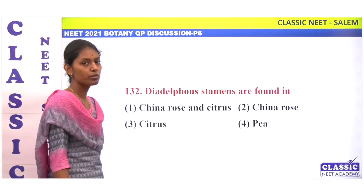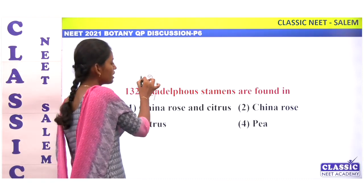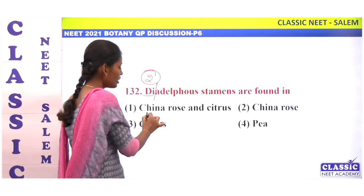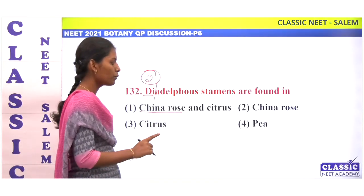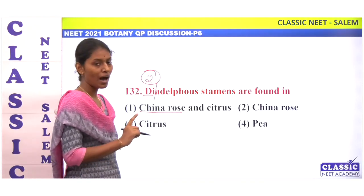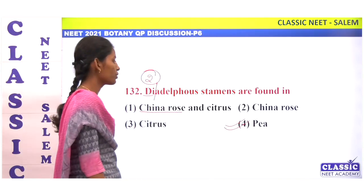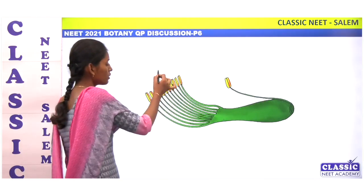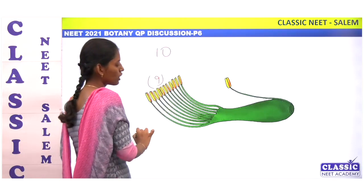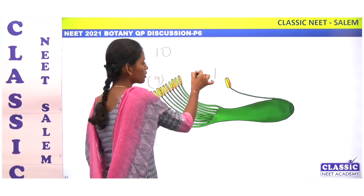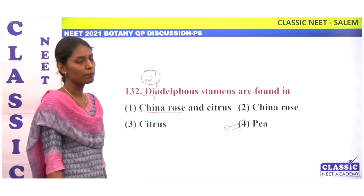Diadelphous stamens are found in what? Diadelphous means two-bundle arrangement of stamens. In family Fabaceae, stamens are in diadelphous condition — 9 plus 1 arrangement. You can see this in Fabaceae.